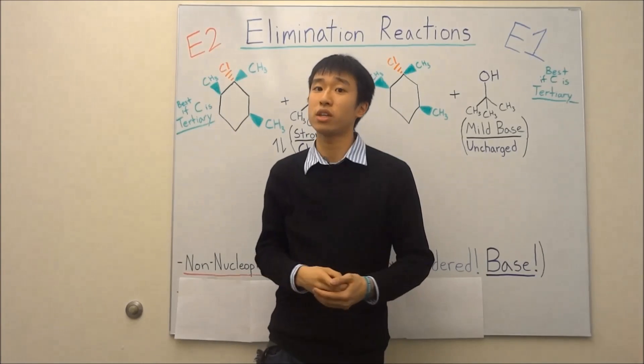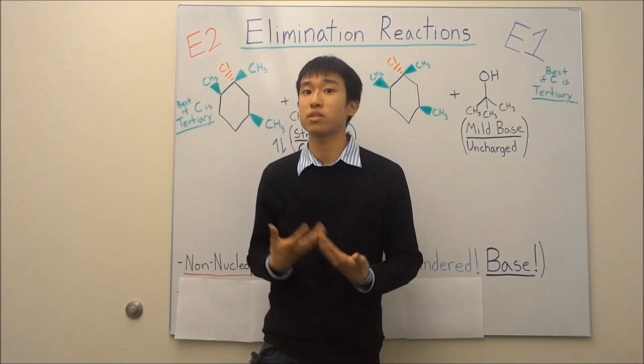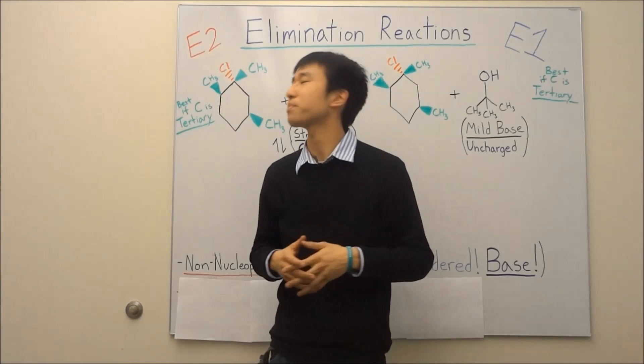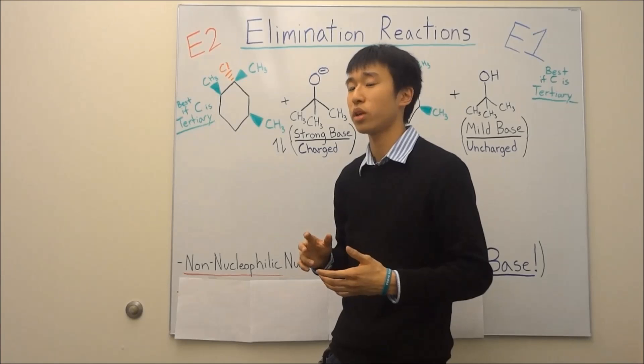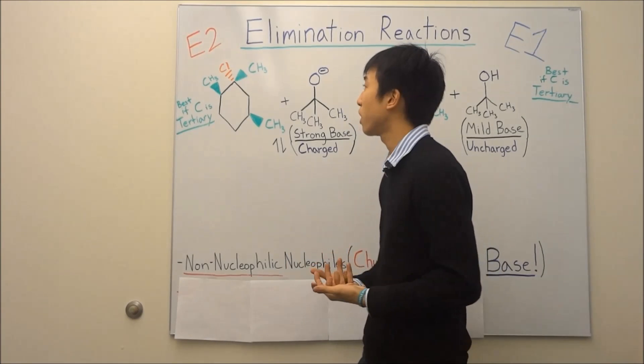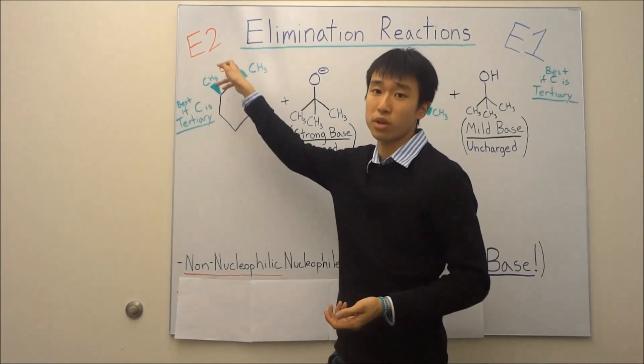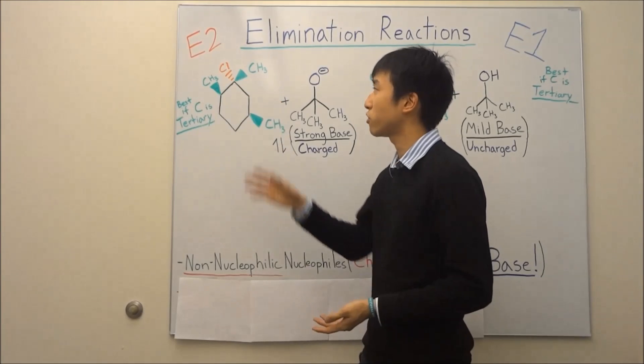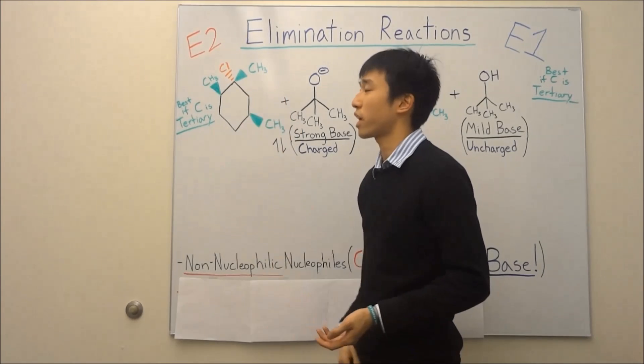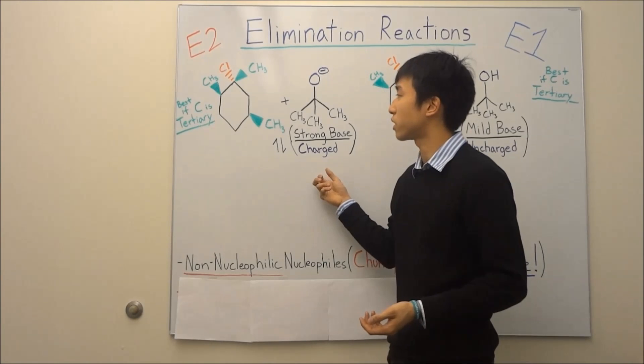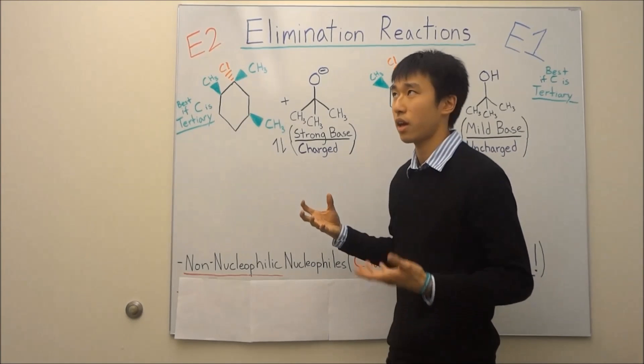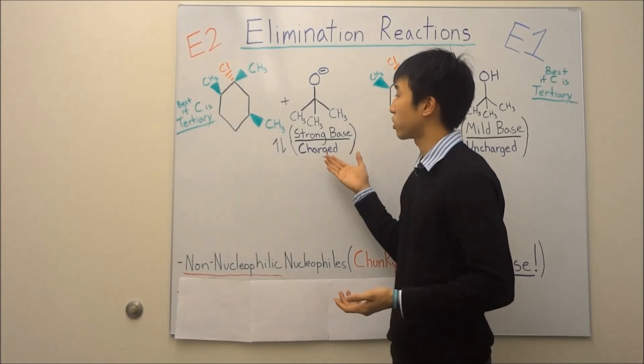The reason why there's a 2 for E2 and why there was a 2 in SN2 is the same exact reason. There's two molecules that are going to play a role in how fast the reaction occurs. It's going to be the leaving group, because if the leaving group is not willing to leave, then the reaction isn't going to occur as quickly. But now, instead of a strong nucleophile that's going to have an effect in how fast your reaction occurs, it's going to be a strong base.